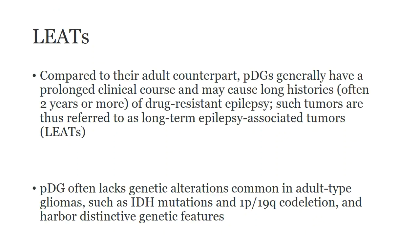LIATs are long-term epilepsy associated tumors. Compared to adult counterparts, pediatric diffuse gliomas generally have a prolonged clinical course resulting in characteristic drug-resistant epilepsy; therefore, these tumors have been grouped as LIATs. Several glioneuronal tumors have also been incorporated under this heading. Importantly, pediatric diffuse gliomas often lack IDH mutations and 1P19Q co-deletions, which are characteristically associated with their adult counterparts.